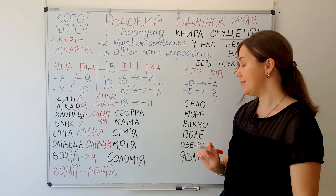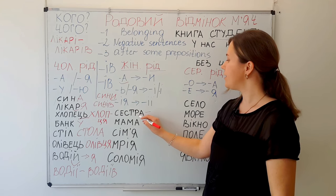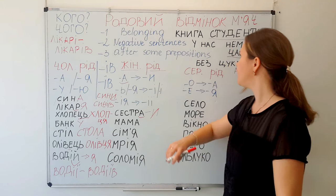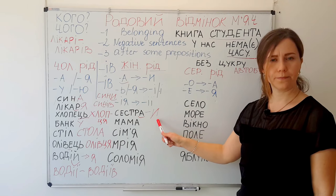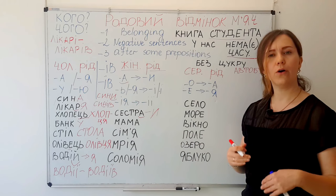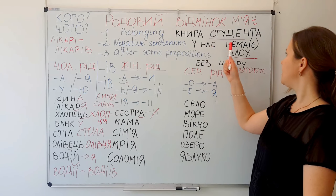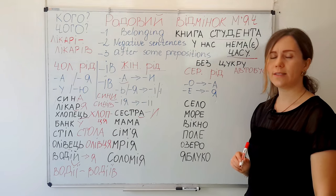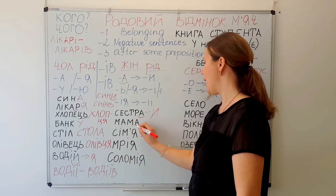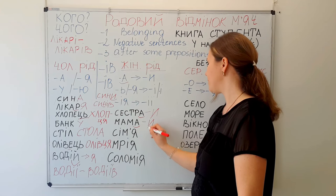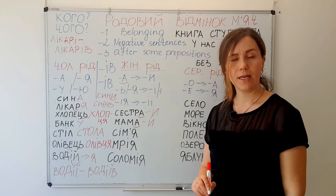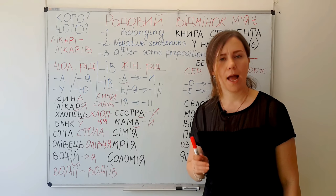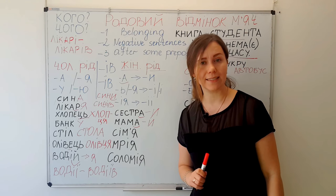Example: сестра — 'a sister.' The ending А changes to И: сестри. Книга сестри — 'a sister's book.' У нас немає сестри. Без сестри — 'without a sister.' Another example: мама — ending А gives us мами. Без мами — 'without a mother.' Книга мами, квартира мами — 'a flat of a mother.'